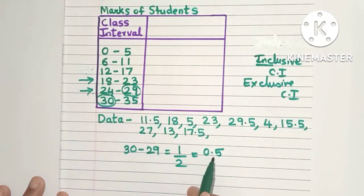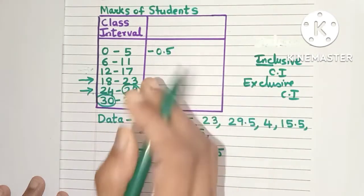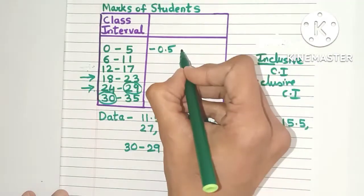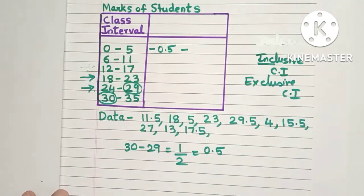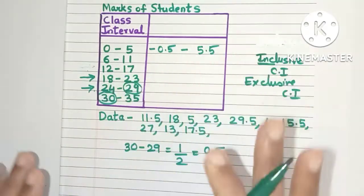So 0 when I subtract 0.5 from it I'll get minus 0.5. Don't worry about the negative sign. Just follow the rule. Now 5 I need to add 0.5. So I'll get 5.5. So this is the first class interval.